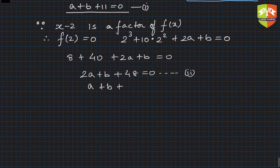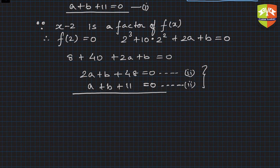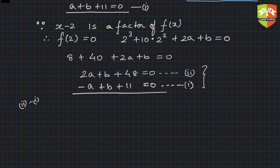We now have a pair of linear equations in two variables a and b. To solve them, subtract equation 1 from equation 2: LHS minus LHS equals RHS minus RHS. So 2a minus a gives a, b minus b cancels, and 48 minus 11 gives plus 37. So a plus 37 equals 0.